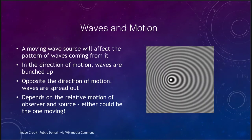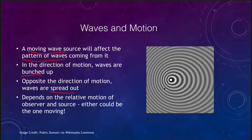Let's look at how this works, starting with waves. When waves are moving, a moving wave source changes the pattern of waves that we see. What we notice is that in the direction of motion the waves get bunched up, and opposite the direction of motion the waves get spread out.